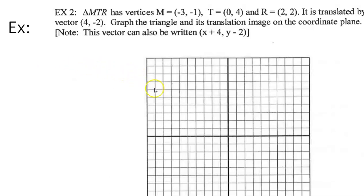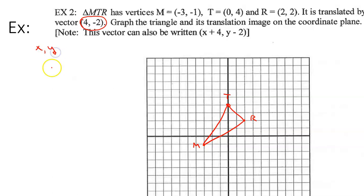Let's look at triangle MTR. The vertices are: M at (−3, −1), T at (0, 4), and R at (2, 2). The triangle is translated by vector ⟨4, −2⟩. This is not an ordered pair — it tells me how far to move each point. Four in the positive x direction means four to the right; negative two in the y direction means two down. So I take each point and move it four to the right and two down. For example, M at (−3, −1) plus vector (4, −2) gives M prime at (1, −3).